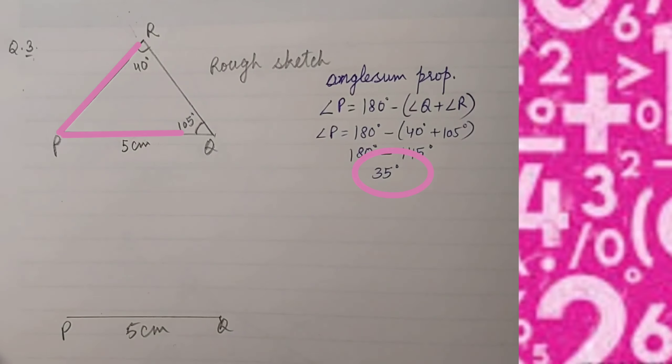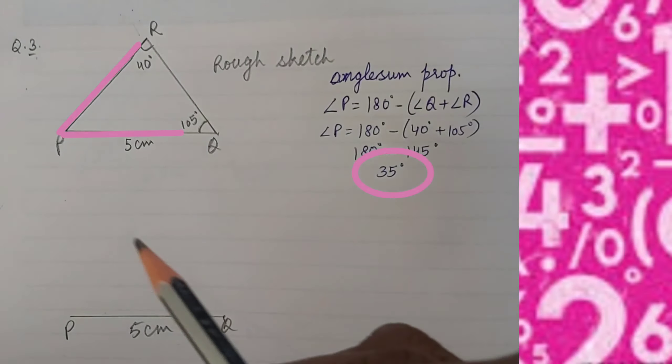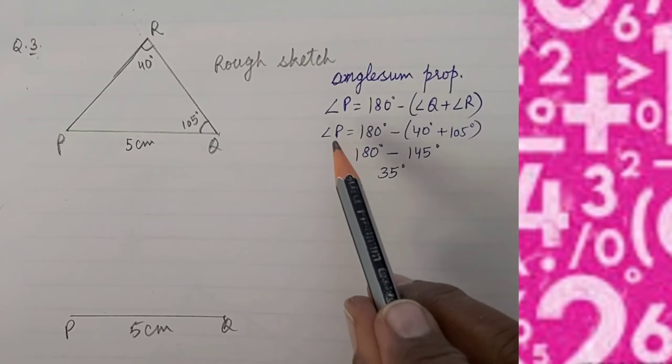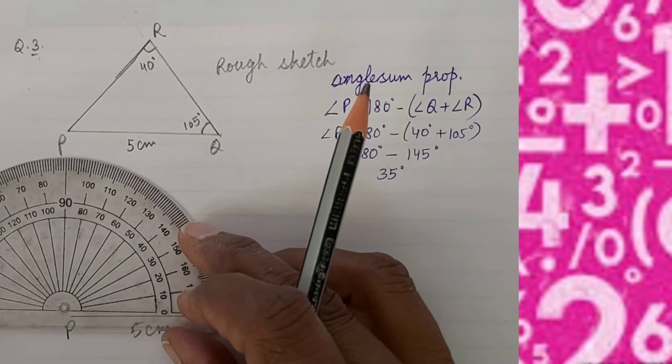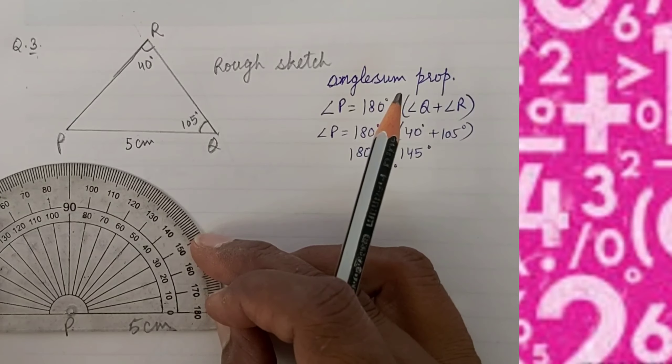For angle P of 35 degrees, because 35 degrees is not divisible by 15, we will use a protractor to construct angle P.